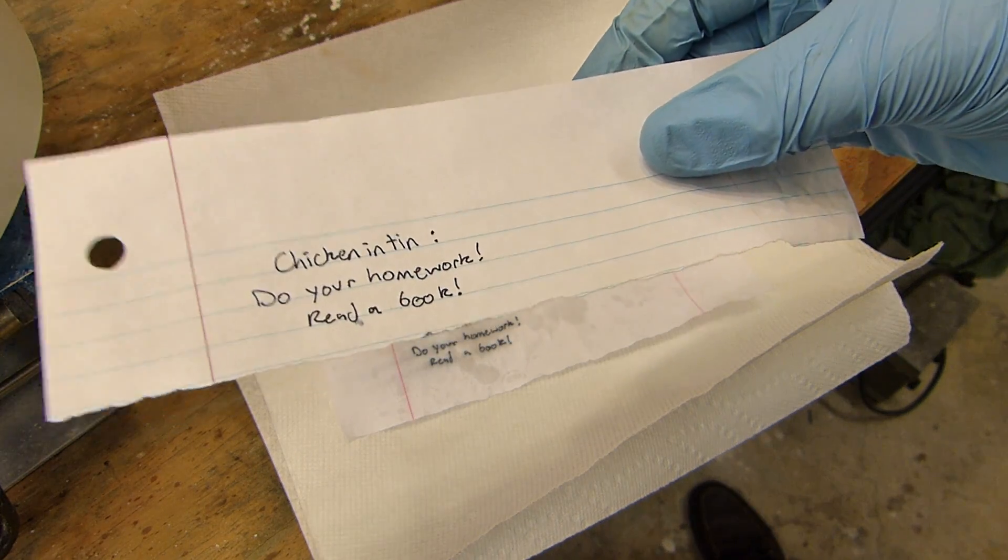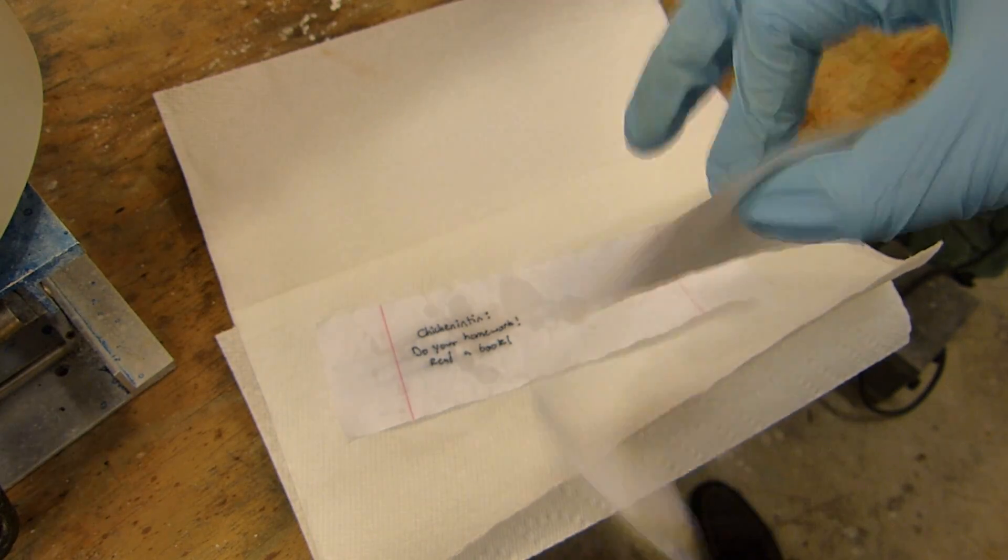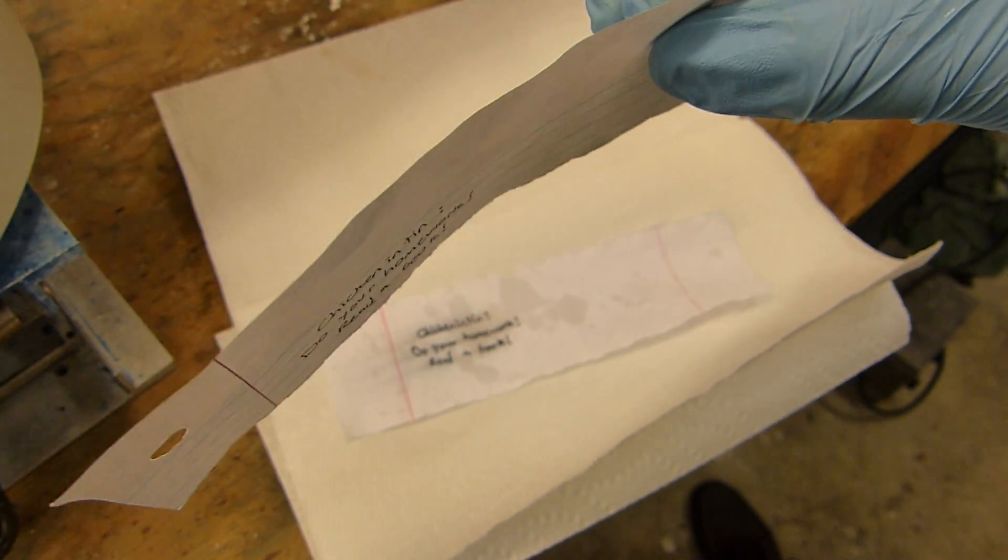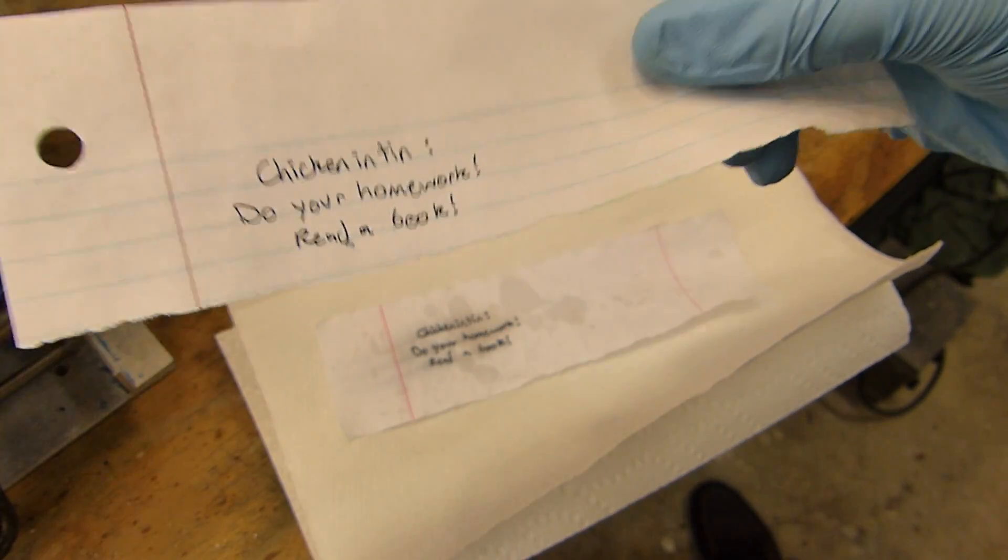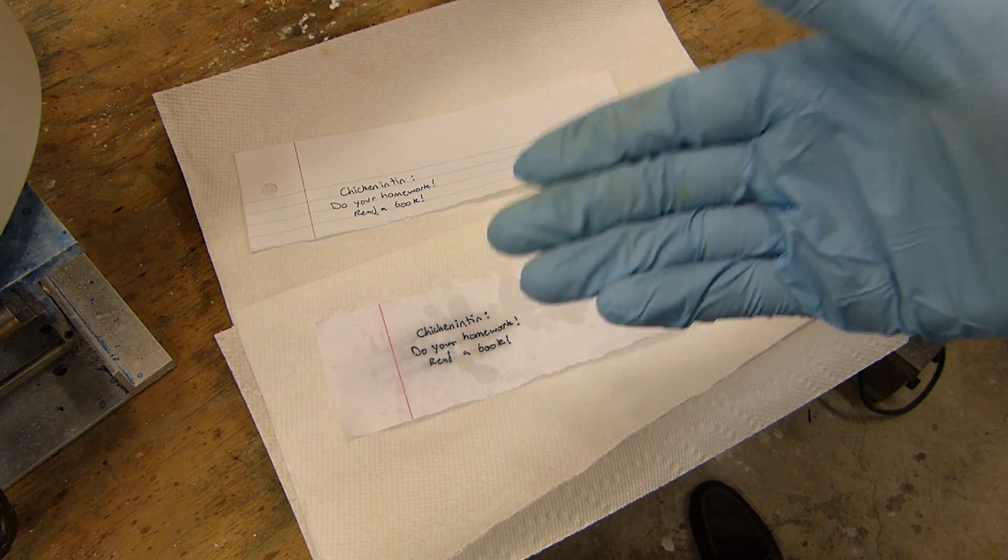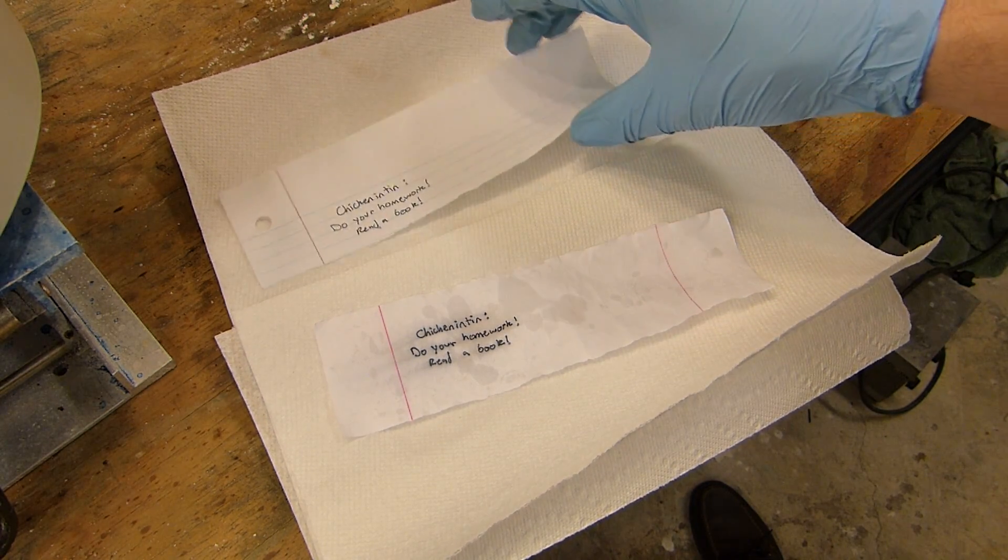However the one that was washed in tetrachloroethylene is completely pristine. The paper is crisp, looks like a new sheet of paper, and the message is fine. The lines are present, this would get an A plus and no one would even know that you got your nasty popcorn fingers all over it.